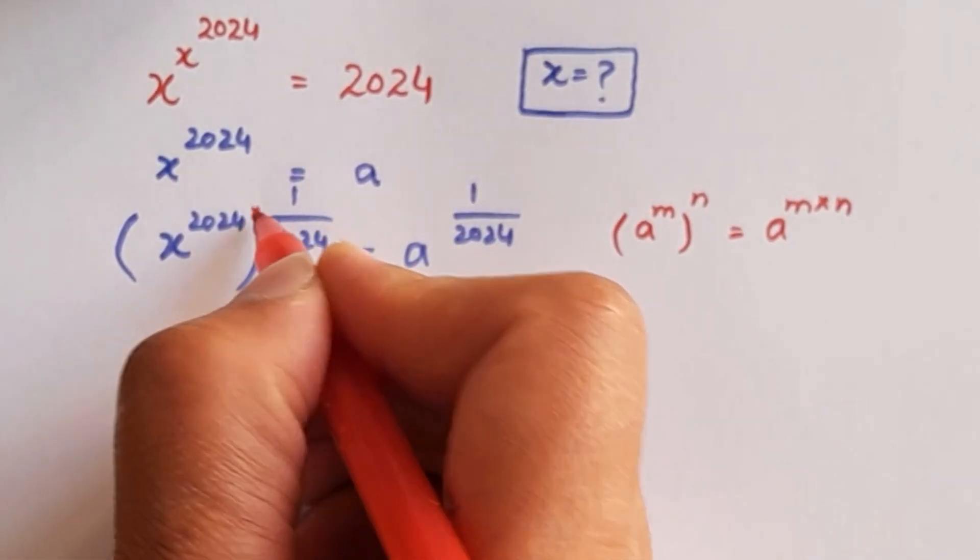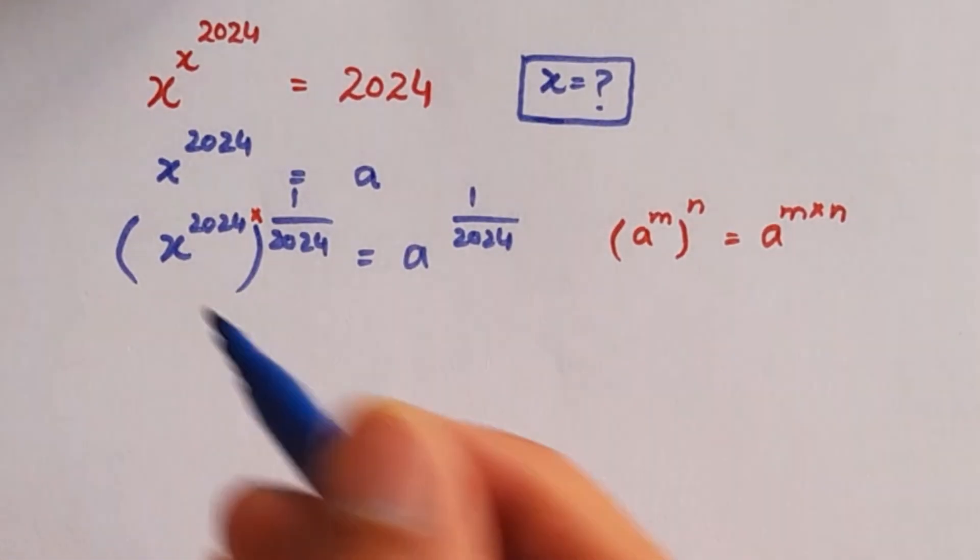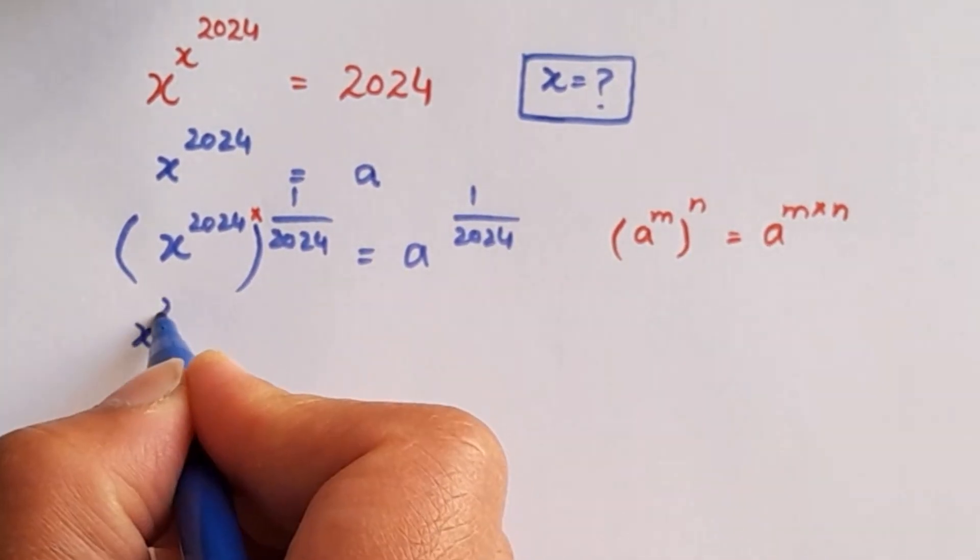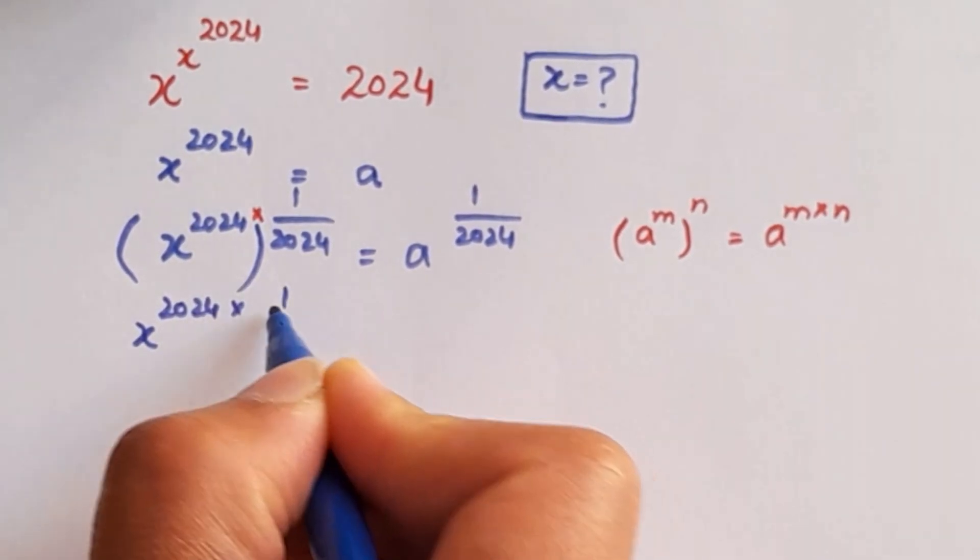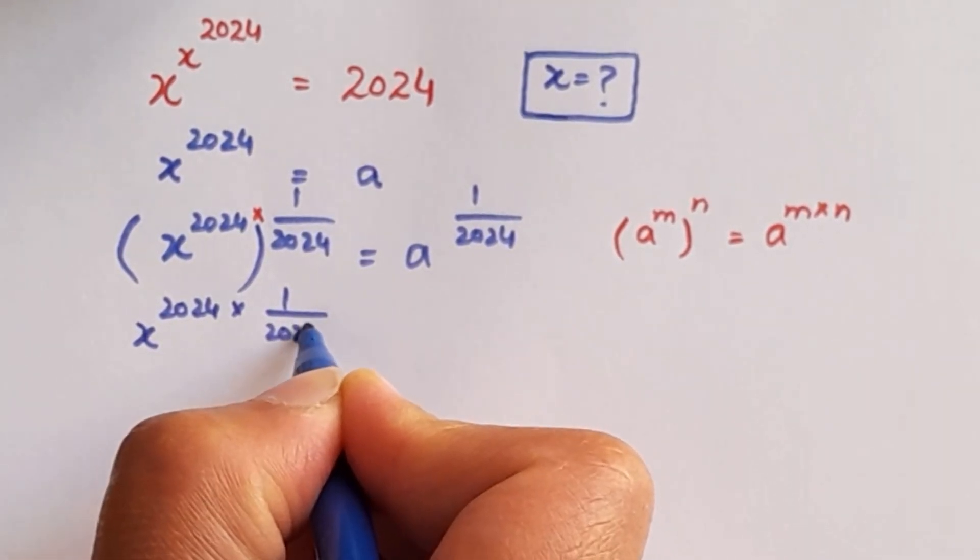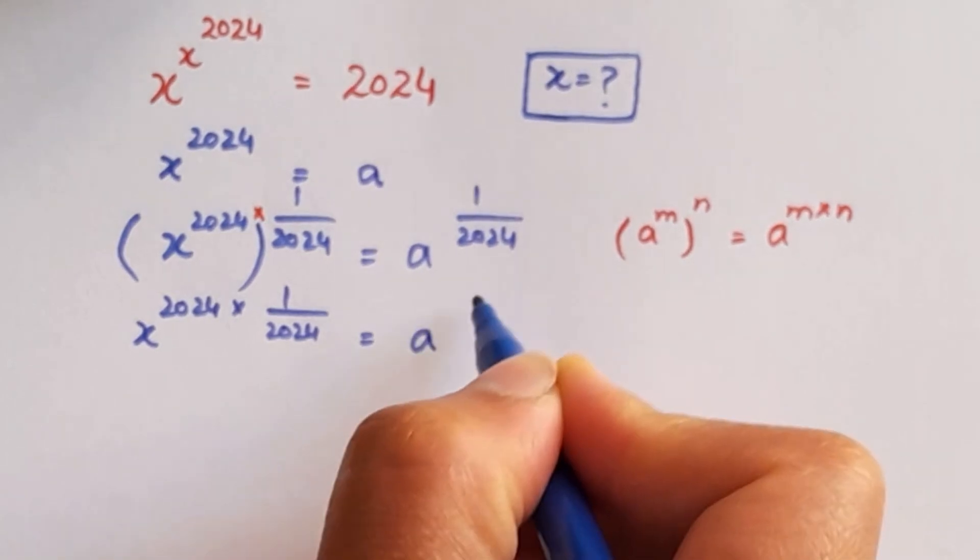These two powers are going to be multiplied: x to the power 2024 times 1 over 2024. Right hand side as it is.